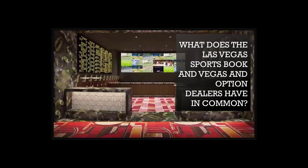The sports book in Vegas and the options market have a lot in common. The sports book wants an equal amount bet on each team, adjusting the line so equal bets come in from each side — they don't care which team wins. The options dealers are the same way. They'll both be buying and selling puts and calls. As puts and calls are bought and sold throughout the day, the VIX is going to move higher and lower, and that's why we follow it.